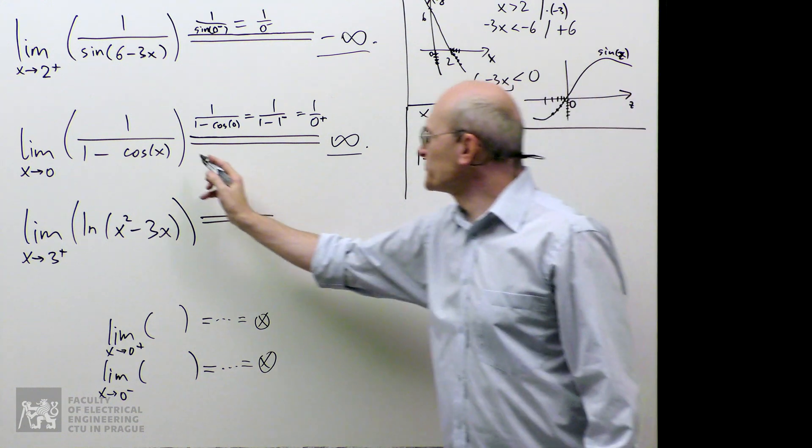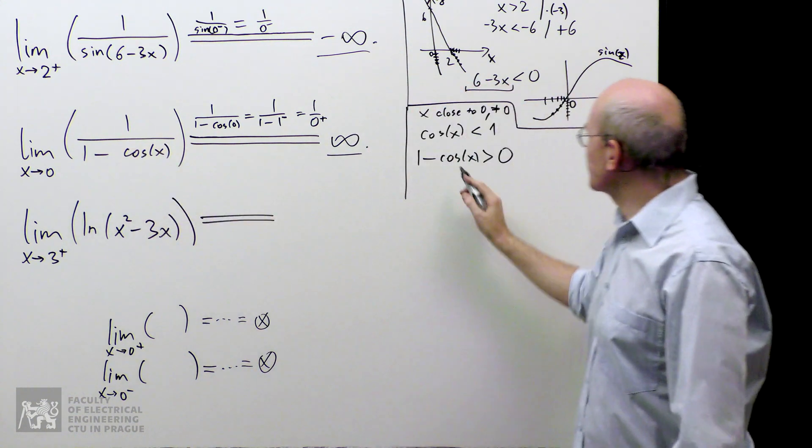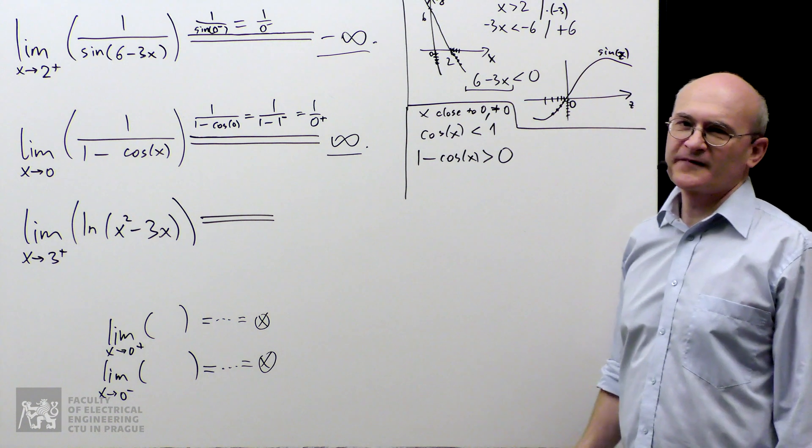And the multiplication switches the direction and there will be 0 here. And I can see that the denominator is actually positive, so it's 0 plus.